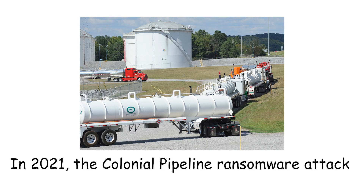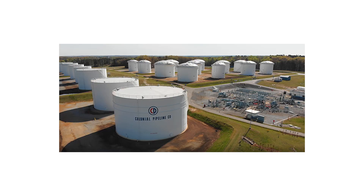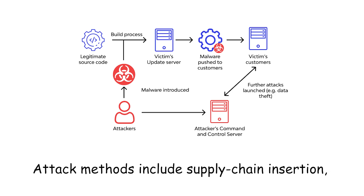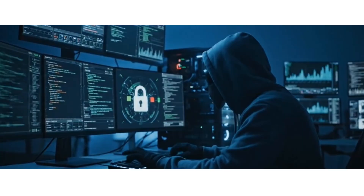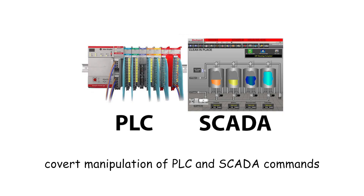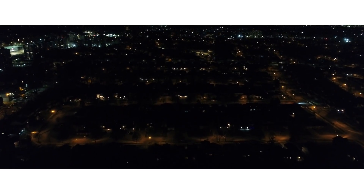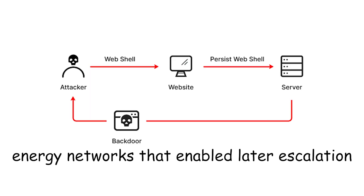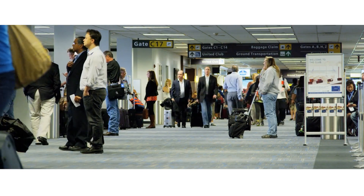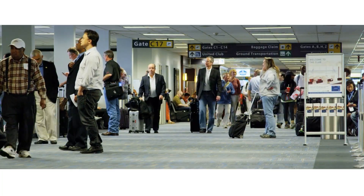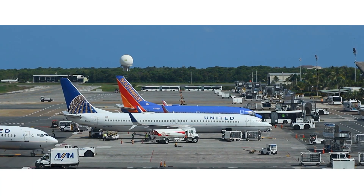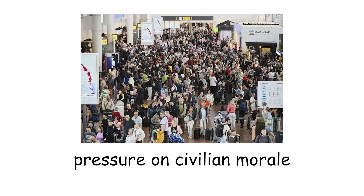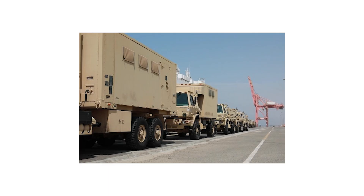In 2021, the Colonial Pipeline ransomware attack forced operators to halt fuel distribution, leading to widespread shortages across the US east coast. Attack methods include supply chain insertion, spear phishing of OT administrators, bridging air-gapped systems via removable media, and covert manipulation of PLC and SCADA commands. Real-world results have included remote switching of power substations producing mass blackouts, persistent backdoors inside energy networks enabling later escalation, and aviation service provider compromises that forced airports to revert to manual processing. The strategic effect is direct pressure on civilian morale, economic continuity, and military logistics that depend on public infrastructure.